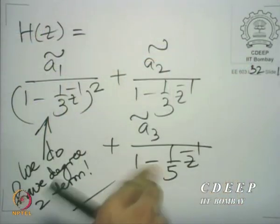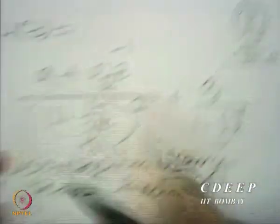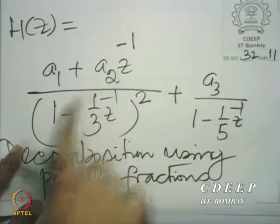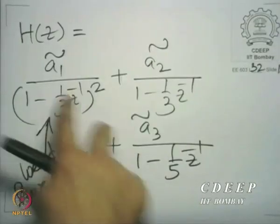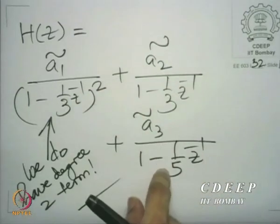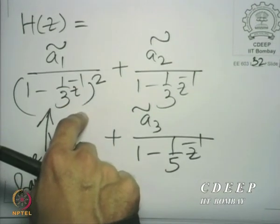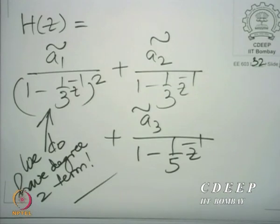The point to be noted here is that whether we take this decomposition or this decomposition, either of them, we cannot avoid this degree 2 term here. So in a way, we don't gain too much by this structure. We do have to realize a degree 2 term anyway. And that's why we call it cascade parallel.